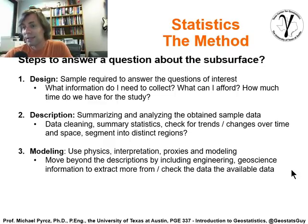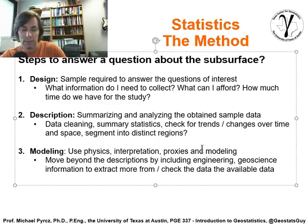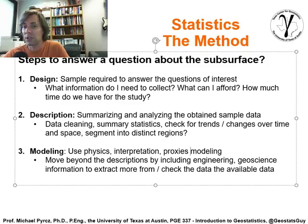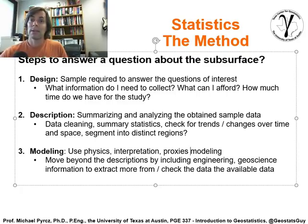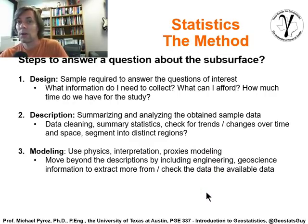Modeling is where we take the data and try to move a little bit beyond it. We use physics, interpretation, proxies — proxy modeling — in order to understand the data better. We move beyond just the statistics and descriptions, and we incorporate engineering and geoscience information to extract more from the data and, more importantly, to check the data. This is where we use our subject matter expertise and realize that data has an issue, or that we need to go back and sample further.